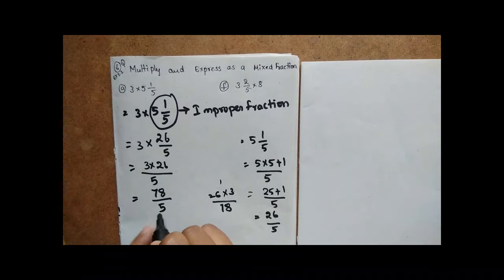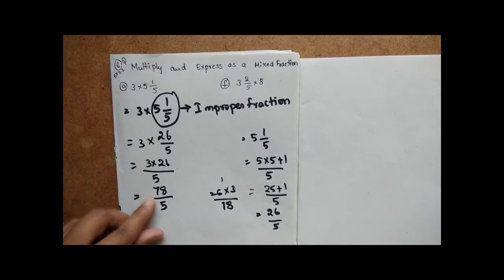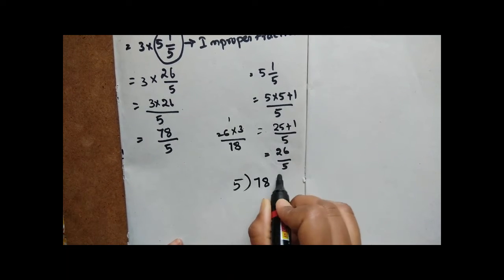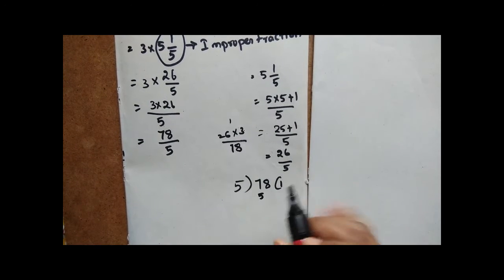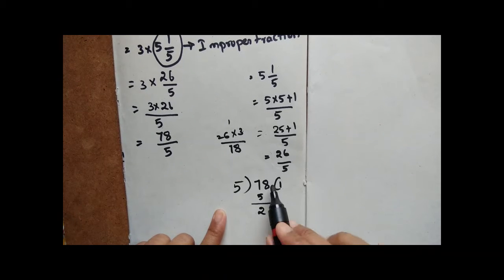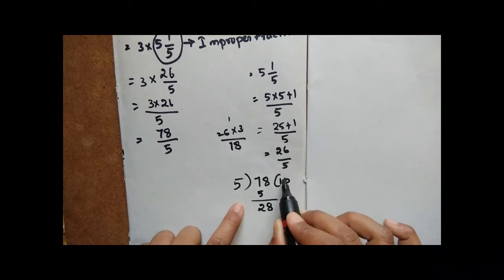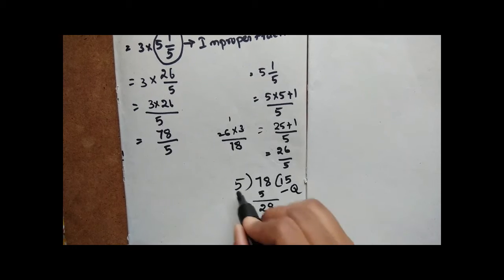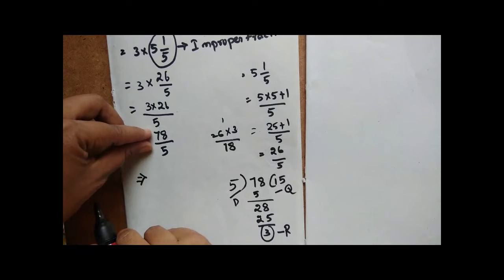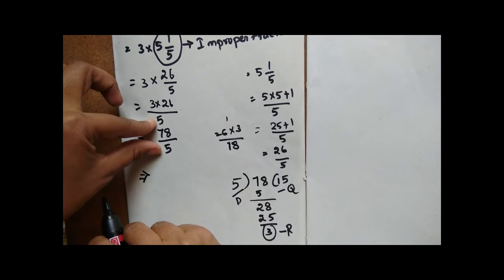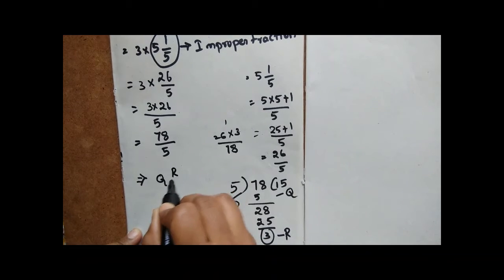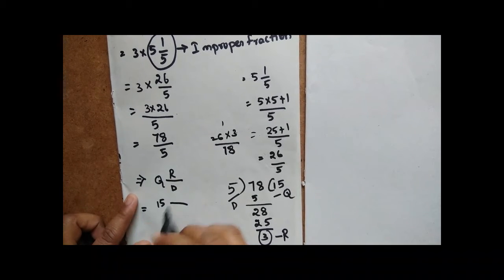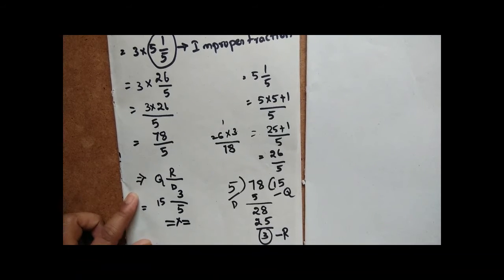Now we have to express 78 by 5 as a mixed fraction. The simple way is to apply division. 78 is the numerator and 5 is the denominator. Dividing: 5 into 78 — 5 fifteens are 75, remainder is 3. So the quotient is 15, remainder is 3, and the divisor is 5.